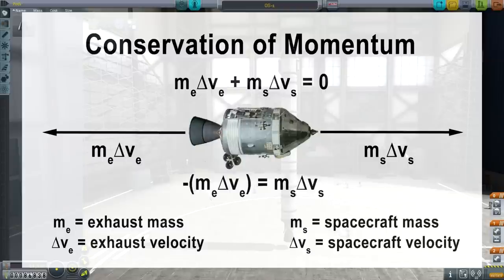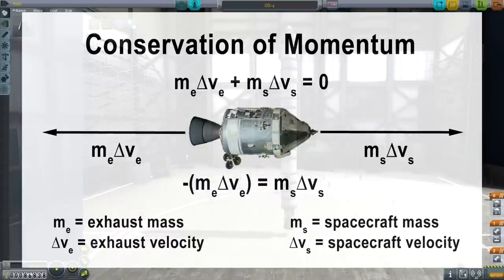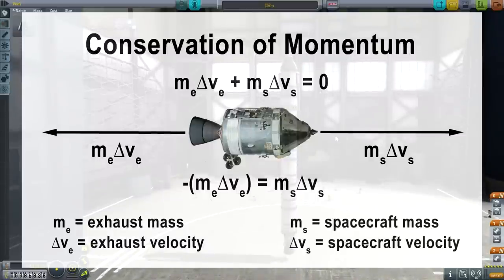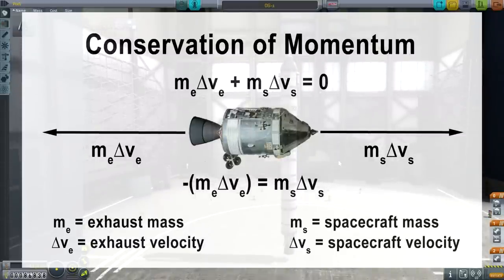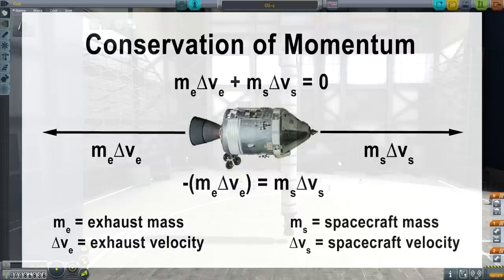For all intents and purposes, both velocities actually start at zero for our calculations. So the delta-V is the total exhaust velocity that ends up shooting out of the nozzle, and the delta-V is the change in the spacecraft's velocity as a result of how fast you shot the exhaust out of the nozzle.